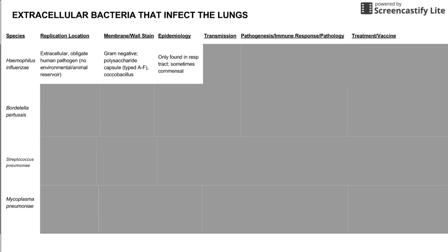Haemophilus is only found in the respiratory tract, and it's sometimes part of the commensal bacteria, meaning it's not always a pathogen. It is possible to find Haemophilus as part of the normal flora in the lungs, but the majority of the time it's causing a problem — usually a pneumonia. Usually pathogenic, but could be commensal.